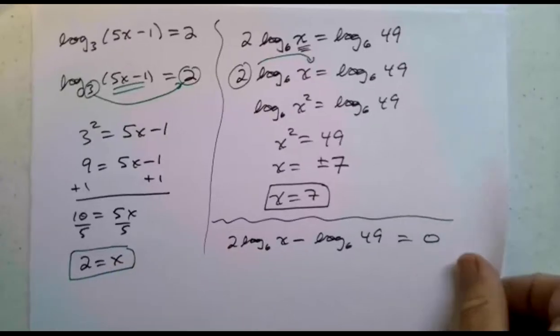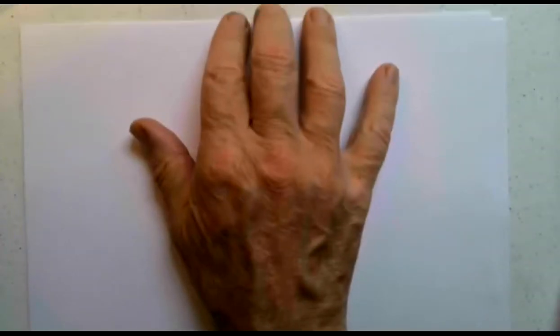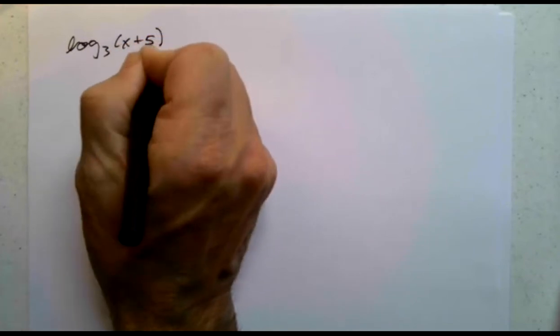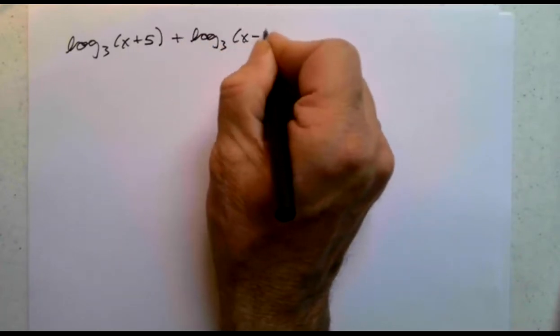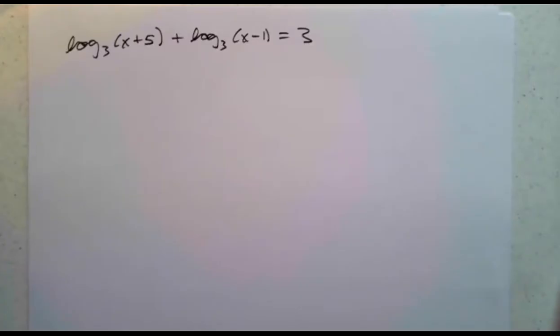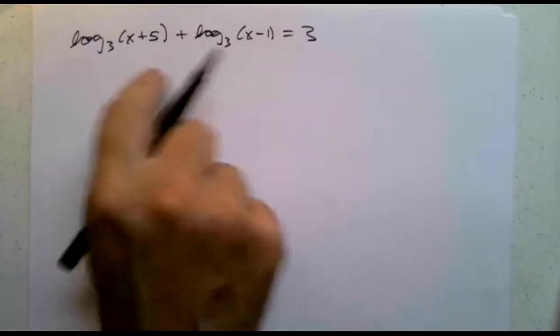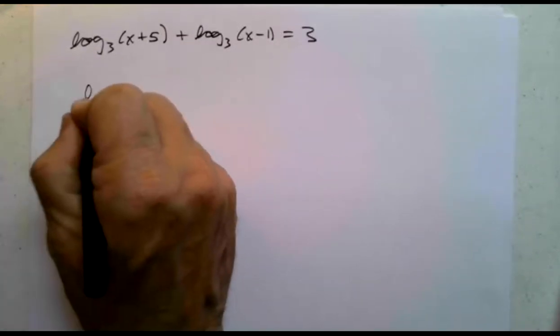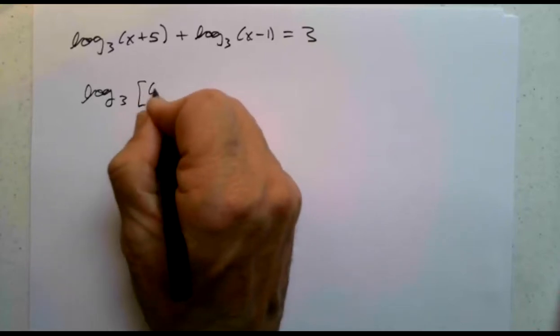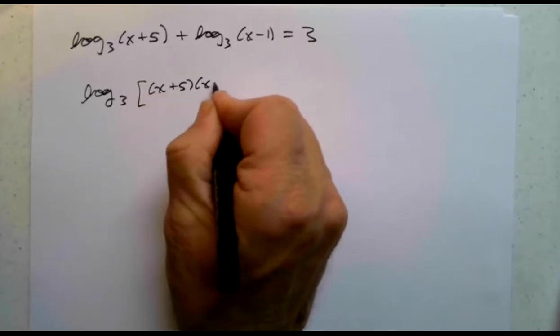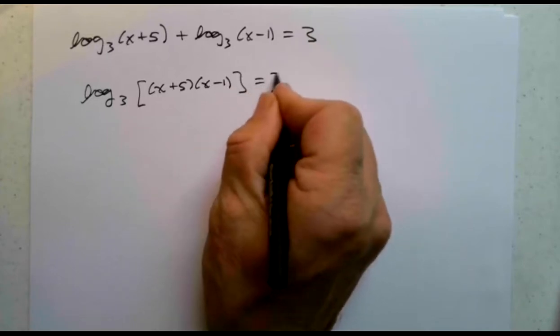All right. Our next question is going to be log base 3 of x plus 5 plus log base 3 of x minus 1 equals 3. So how is this going to work? We have the sum of logs. The sum of logs is the log of the product.